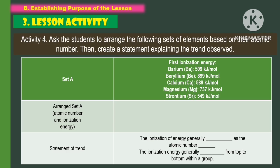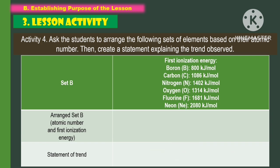For the lesson activity, the students will accomplish activity number four. Ask the students to arrange the following sets of elements based on their atomic number, then create a statement explaining the trend observed.